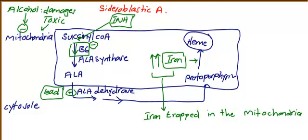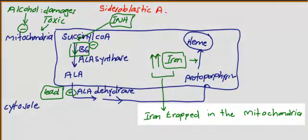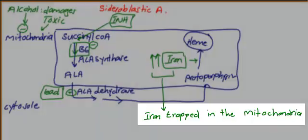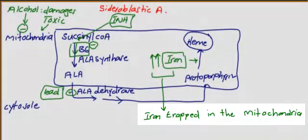The iron increases in the mitochondria to several amounts, leading to iron trapped in the mitochondria. So look how all of these pathophysiological mechanisms are essentially the same.